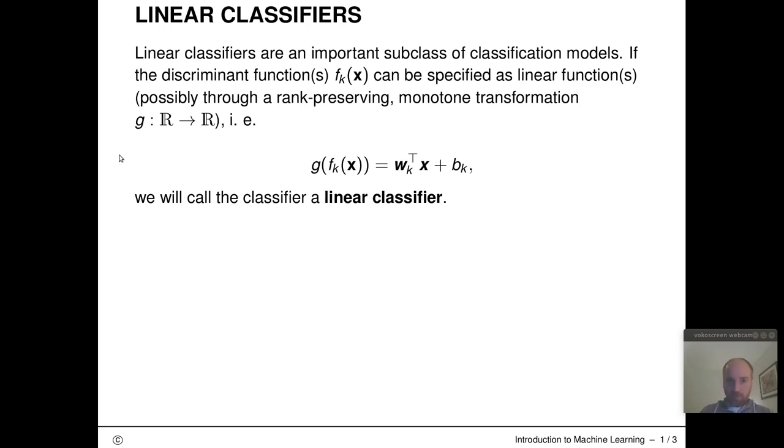I will now call any classifier a linear one if I can specify all of its scoring functions f_k either directly as a linear formula: some vector of constants transposed times the feature vector plus some intercept or bias term b_k.